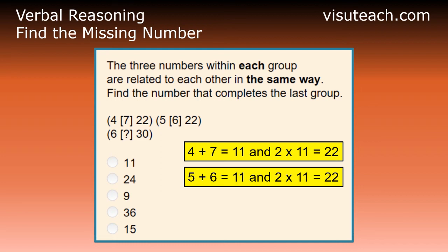So, for each group, the relationship between the numbers is that the third number is twice the sum of the first and second numbers.